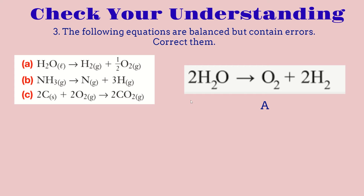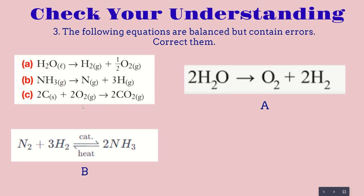For the second equation, NH₃ = N + 3H. The reason this is wrong is because N and H are gases, and gases can never stand by themselves — they always need to appear as diatomic molecules. So it should be N₂ + 3H₂. The correct balanced equation becomes 2NH₃ = N₂ + 3H₂.